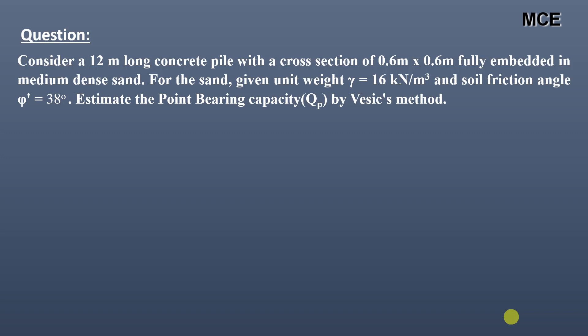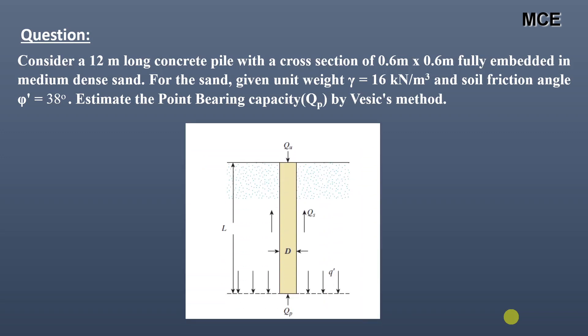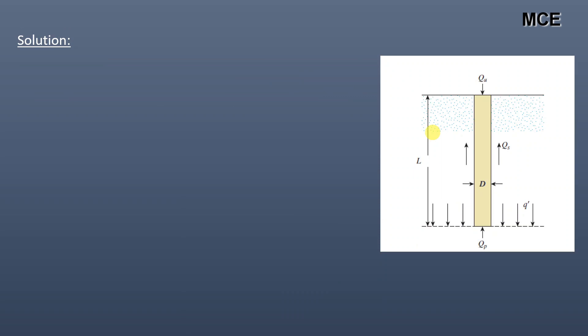Hello and welcome to Master Civil Engineering. In this video we will learn how to calculate the point bearing resistance of a pile using the Vesic method. The question states: consider a 12-meter long concrete pile with a cross section of 0.6 m × 0.6 m, fully embedded in a medium dense sand. For the sand, unit weight γ = 16 kN/m³ and soil friction angle φ' = 38°. Estimate the point bearing capacity by the Vesic method.